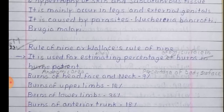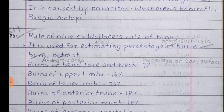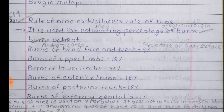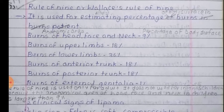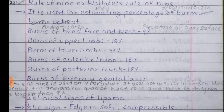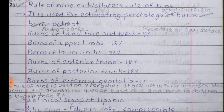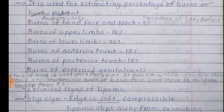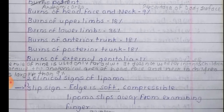The Rule of 9, or the Wallace Rule of 9: This formula is generally used for estimating the percentage of burns in a burn patient — very, very important. A burn question is generally asked for 10 markers and more importantly 20 markers, and these 2 markers are also very important. You can also make a diagram of it to make it easier. The distribution: burn of head, face and neck 9%; burn of upper limbs 18%; burn of lower limbs 36%; burn of anterior trunk 18%; burn of posterior trunk 18%; burn of external genitalia 1%.